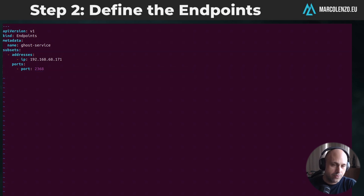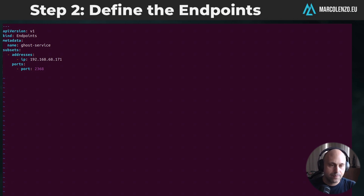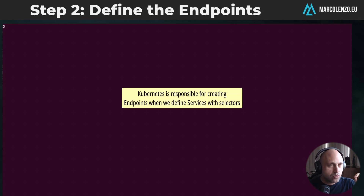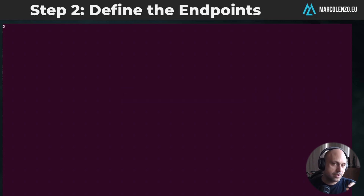Now, before we move to the last step, I want to show you something quick so you understand better the relationship between service and endpoints. When we define a standard service with a selector, it's Kubernetes that creates the endpoints object automatically. And I will show you this with a concrete example.